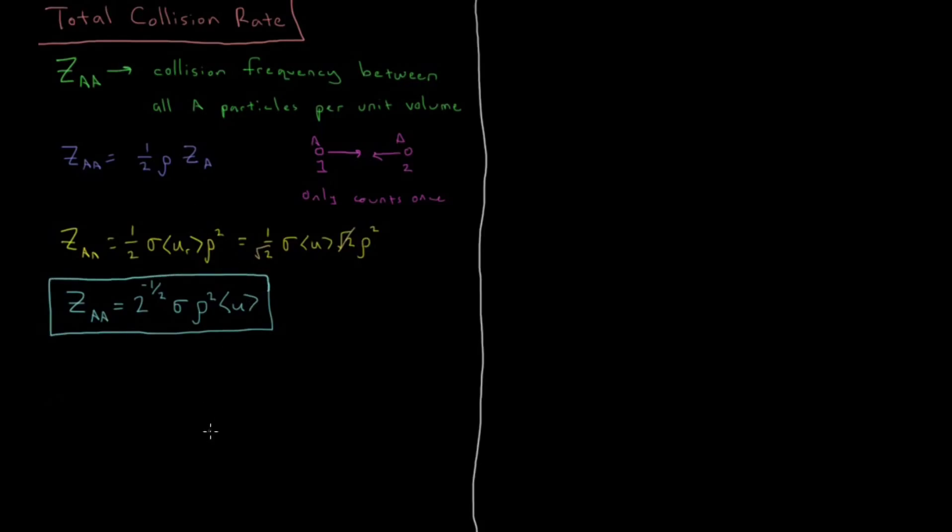So this is going to be collisions between molecules of the same type. We could similarly define a quantity called ZAB which defines the collision frequency between different kinds of particles, so collision frequency between A and B particles.